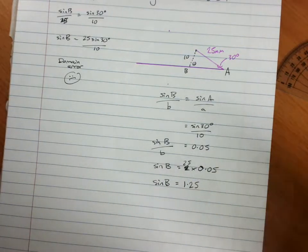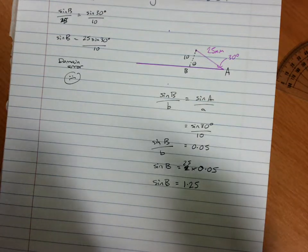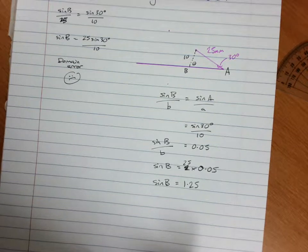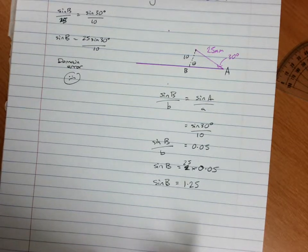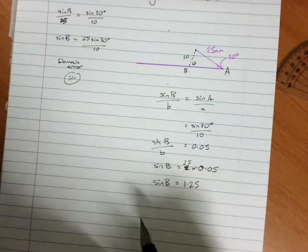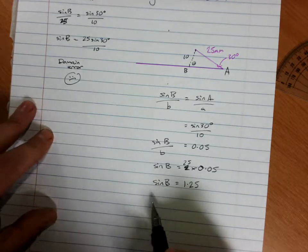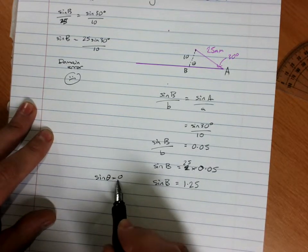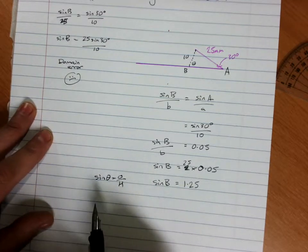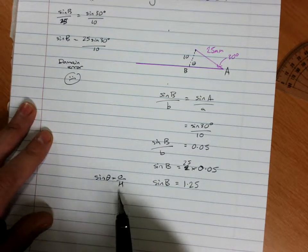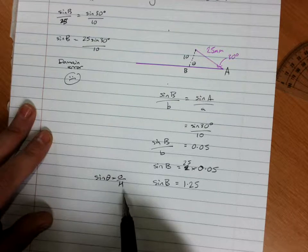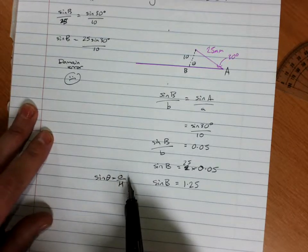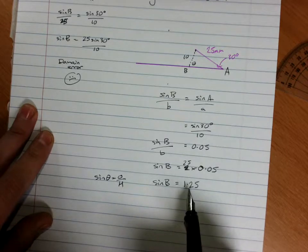Now, here, you should be able to tell me what's wrong. Have a think about it for a bit. And if you still need the help, sine theta is opposite over hypotenuse. Hypotenuse is your longest side. Therefore, sine of the angle has to be less than 1.